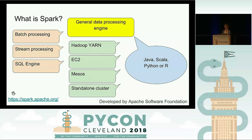Let's back up. Spark is a general data processing engine, which is good for batch processing and stream processing. It has a SQL engine built in. You can run it on a multitude of scheduling backends such as Hadoop YARN, EC2, Mesos, and as a standalone cluster. You can write applications in Java, Scala, Python, or R. It's developed by Apache Software Foundation.